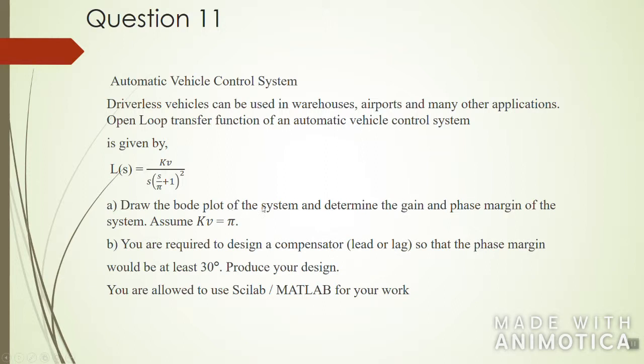A is to draw the Bode plot of the system and determine the gain and phase margin of the system given that Kv is equal to π. Also we are required to design a compensator for our system using lead or lag technique so that the phase margin will be at least 30 degrees. We are allowed to use Scilab in this project. So the first thing we have to do is draw the Bode plot of the system so we can have the gain and phase margin of the system.